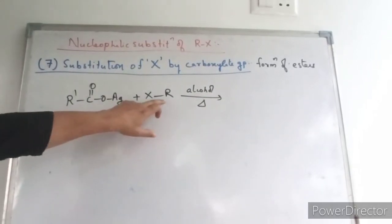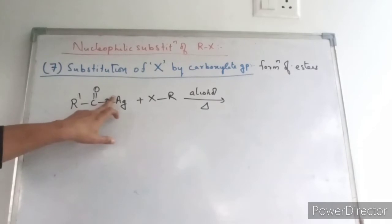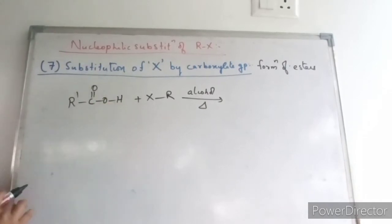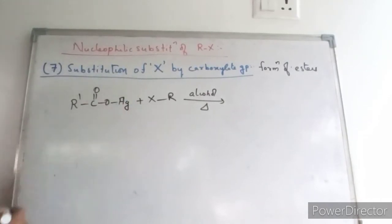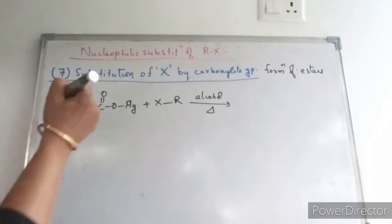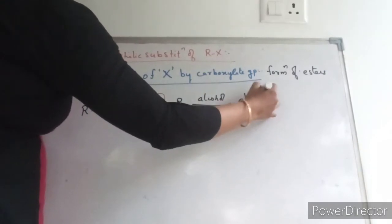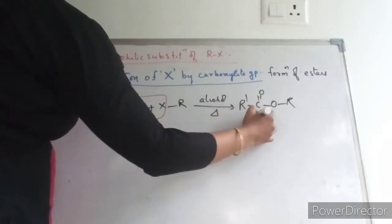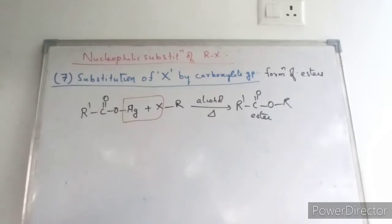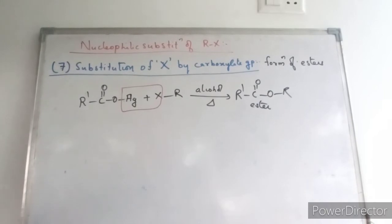For that I have taken the alkyl halide. In order to have substitution, we are taking the silver salt of carboxylic acid. If this is R-COOH, this is carboxylic acid, and we take the silver salt of carboxylate. AgX will be eliminated and you will be getting R-COOR. So this functional group is known as ester. Alkyl halides are heated with alcoholic solutions of silver salts of fatty acids and esters are obtained.